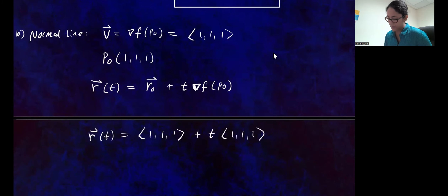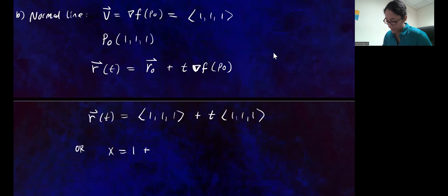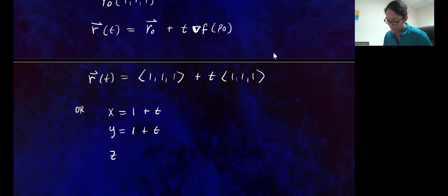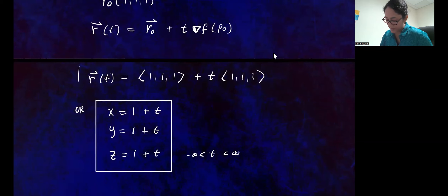That's the vector form of the line. If you want the parametric equations, you can write: X = 1 + t, Y = 1 + t, Z = 1 + t, where t ranges from negative infinity to infinity. So these are the parametric equations of the normal line, and the vector equation above is the vector form of that normal line.